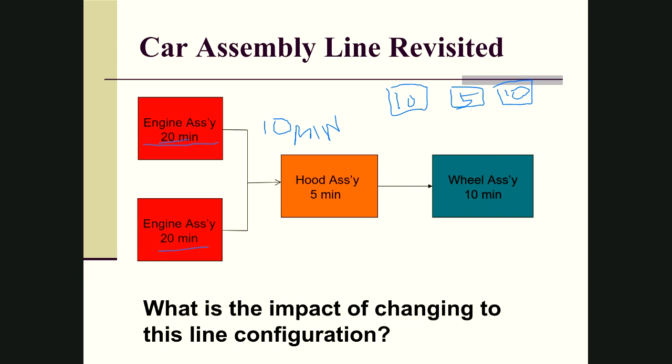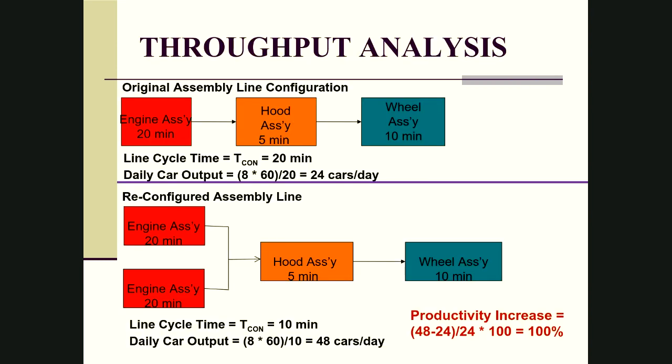Looking at the impact: in the original scenario, the line cycle time was 20 minutes and daily car output was 24 cars per day. By reconfiguring the line and reducing the constraint operation time to 10 minutes, we can now produce 48 cars per day — effectively doubling capacity.